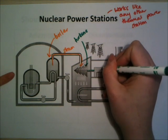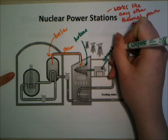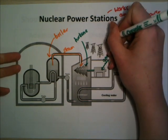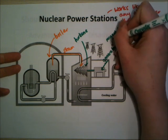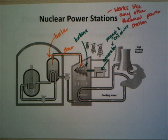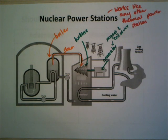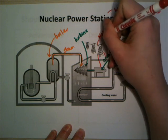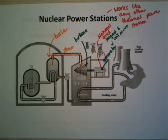The turbine is connected to a generator. Inside the generator there's a magnet and a coil of wire — when that magnet turns inside the coil of wire, it produces an alternating electric current. That current is then connected up to the national grid: the system of pylons, wires, and transformers that makes sure electricity gets from the power stations to your home.